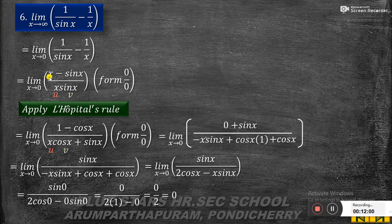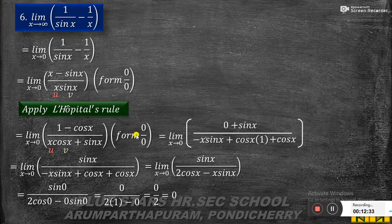Applying L'Hôpital's rule: differentiating the numerator (x minus sin x) gives 1 minus cos x. Differentiating the denominator (x·sin x) using the product rule gives x·cos x plus sin x. Substituting x equal to 0: numerator is 1 minus cos 0 = 1 minus 1 = 0, denominator is 0·cos 0 plus sin 0 = 0. So we get 0 by 0 again — indeterminate form.